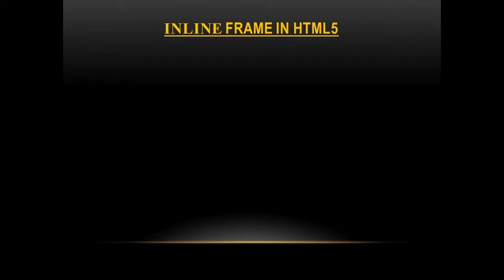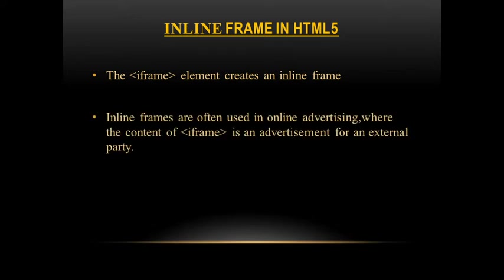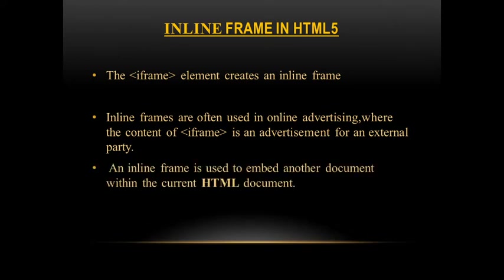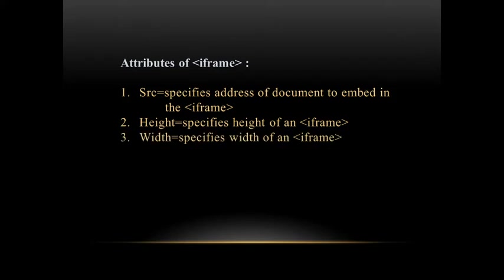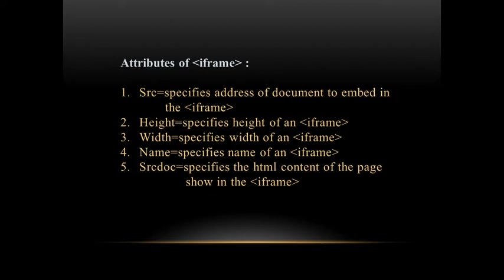For inline frame, we use the iframe tag to create the inline frame. Inline frames are often used in online advertising where the content of the iframe is an advertisement for an external party. An inline frame is used to embed another document within the current HTML document. There are five attributes of iframe: src (specifies the address of the document to be embedded), height, width, name, and srcdoc (specifies the HTML content of the page shown in the iframe).